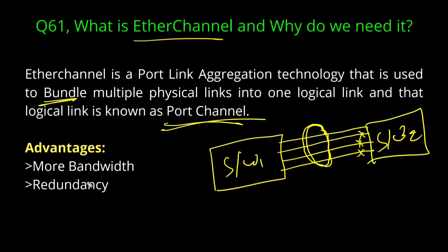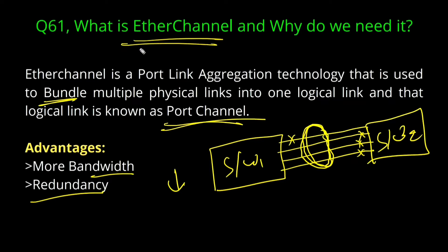The advantages of using EtherChannel are: more bandwidth, because by default due to STP we are using only one link, and there is redundancy as well. If you bundle 4 links together and one link goes down, there will be no problem — bandwidth will reduce slightly but remains high because we are still using 3 links.